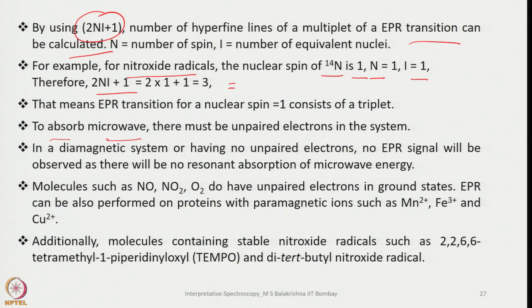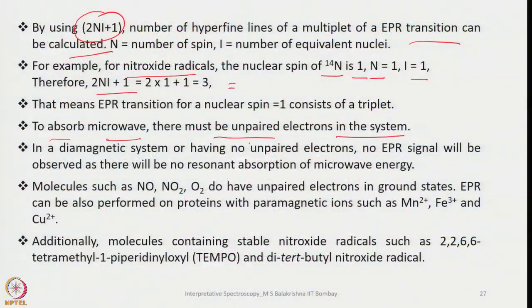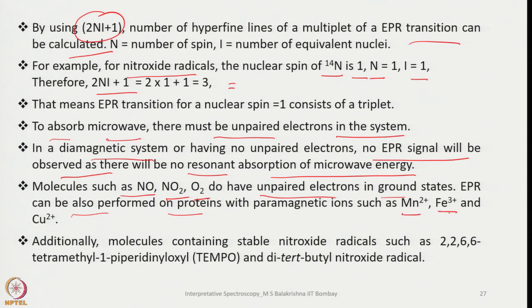To observe microwave absorption there must be unpaired electrons in the system; only radical species can be studied by EPR. In a diamagnetic system with no unpaired electrons, no EPR signals will be observed as there is no resonant absorption of microwave energy. Molecules such as NO, NO₂, and O₂ do have unpaired electrons in the ground state. EPR can also be performed on proteins with paramagnetic ions such as Mn²⁺, Fe³⁺, and Cu²⁺ and other relevant transition metal ions.